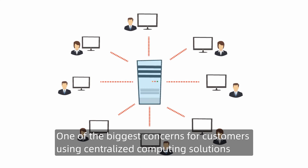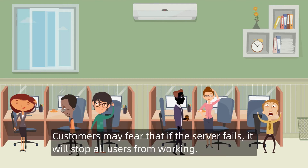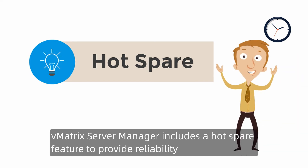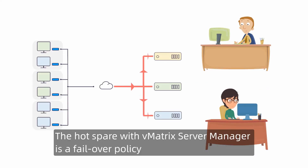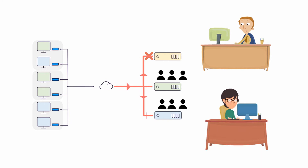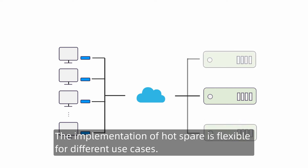One of the biggest concerns for customers using a centralized computing solution is the single point of failure. Customers may fear that if the server fails, it will stop all users from working. Vmatrix Server Manager includes a hotspare feature to provide reliability for your RDS deployment. The hotspare with Vmatrix Server Manager is a failover policy to ensure business continuity for a server group with multiple servers. The implementation of hotspare is flexible for different use cases.